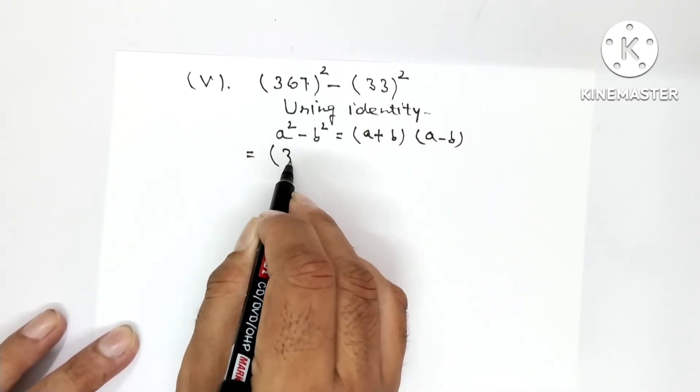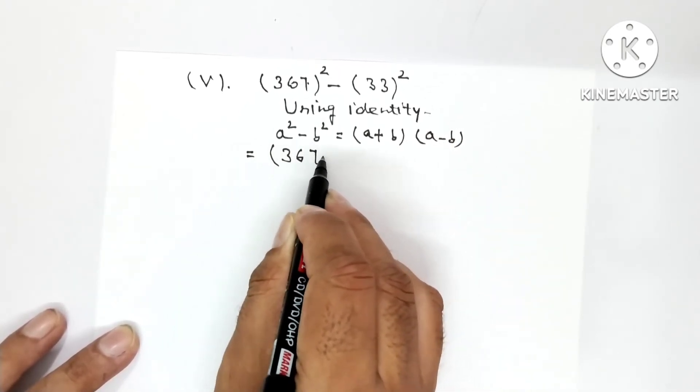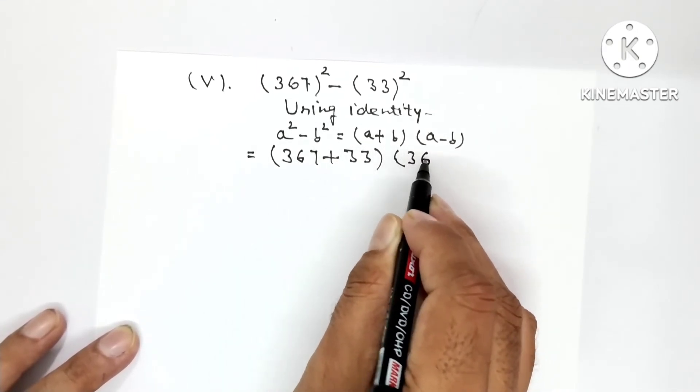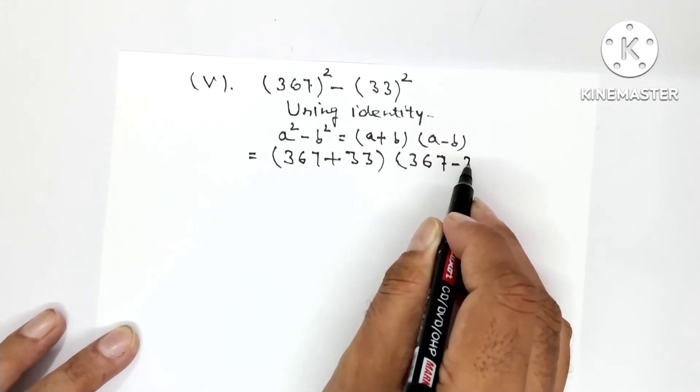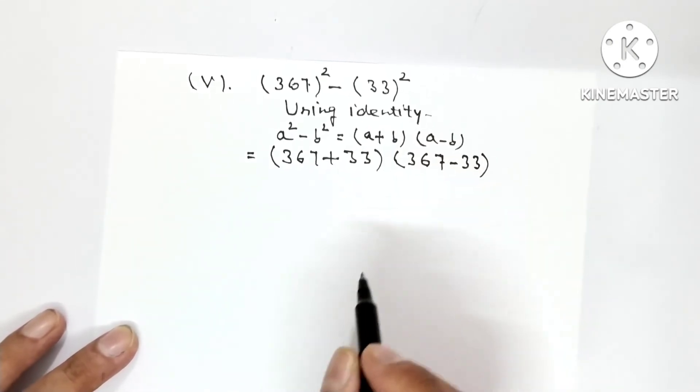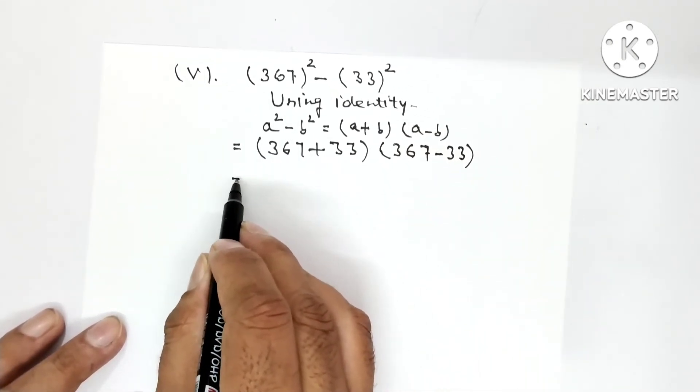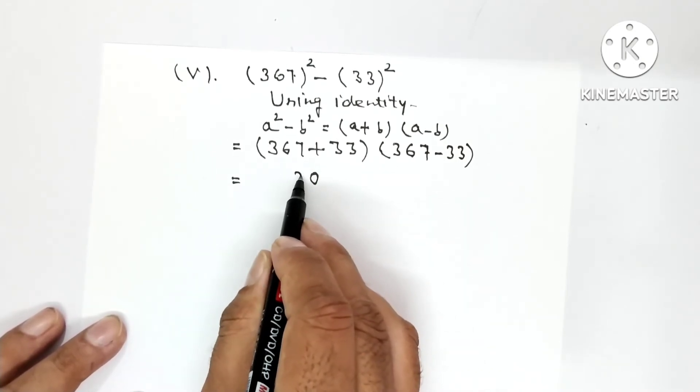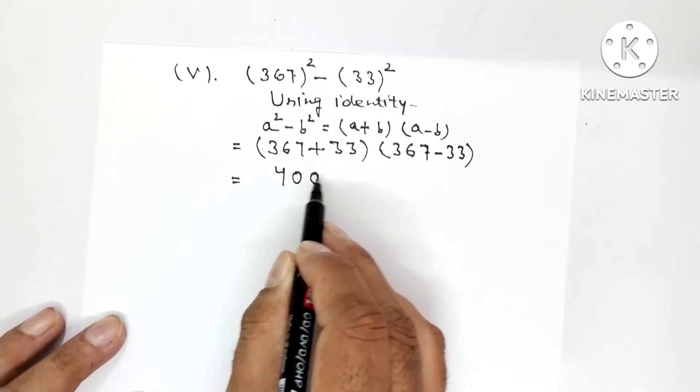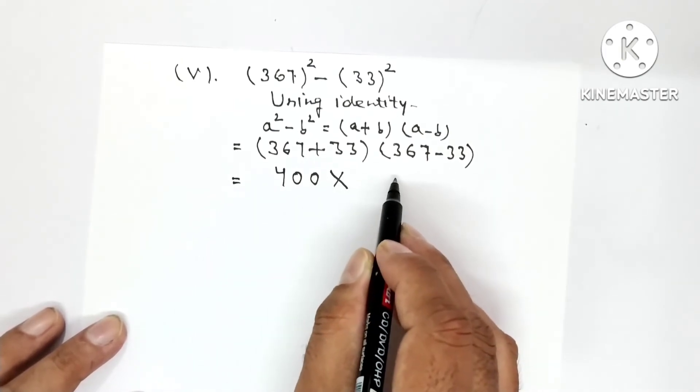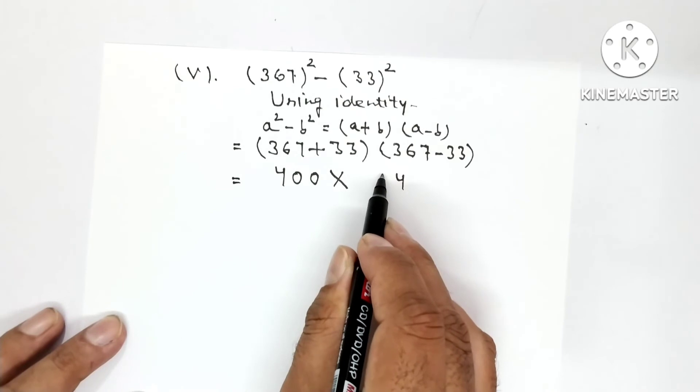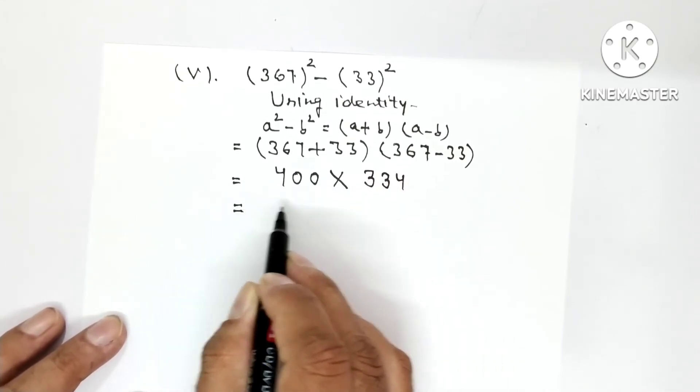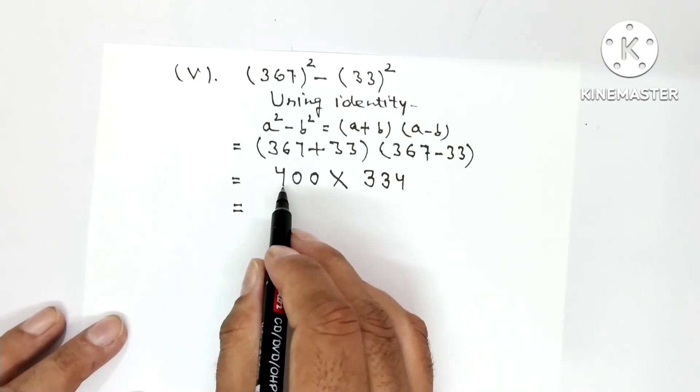A square minus b square is equal to a plus b into a minus b. So a's value is 367 plus 33 into 367 minus 33. If we add 33 to 367: 7 and 3 is 10, 6, 3, 9, 1, 10. 1 is carry. 400 is obtained.